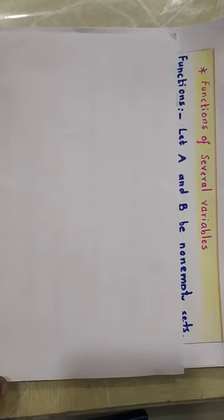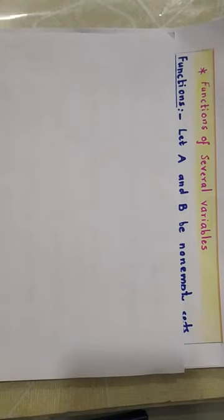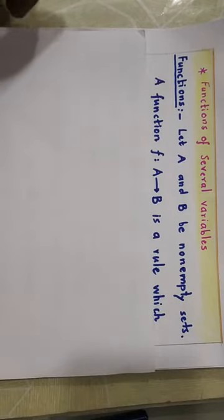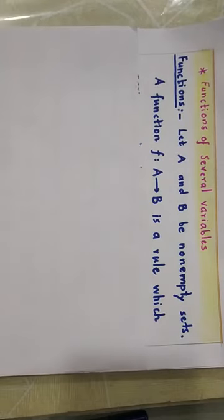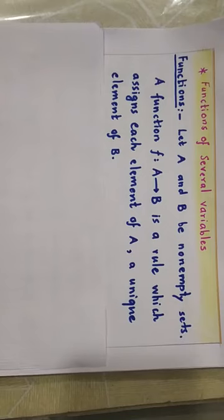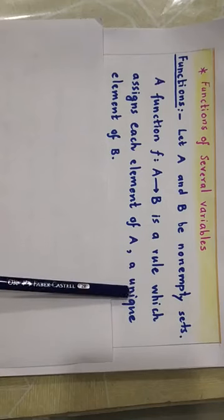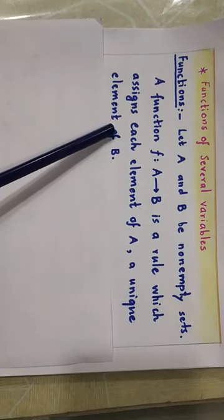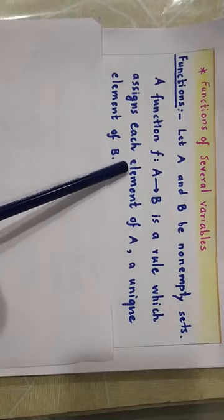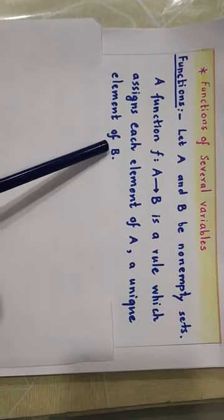First, let us quickly revise the definition of a function. Let A and B be non-empty sets. A function f from A to B is a rule which assigns each element of A a unique element of B. Every element of A should be given some value, and that should be a unique element of B. If some element of A remains unassigned — not assigned any value of B — then it will not be a function; it will be just a relation.